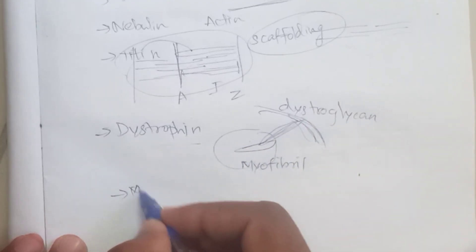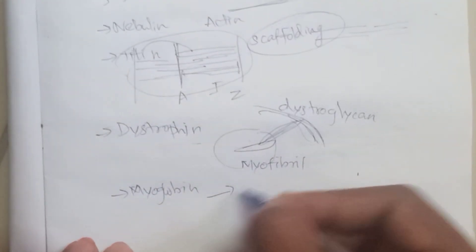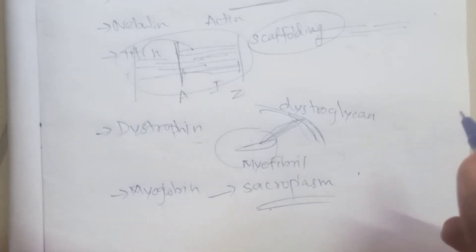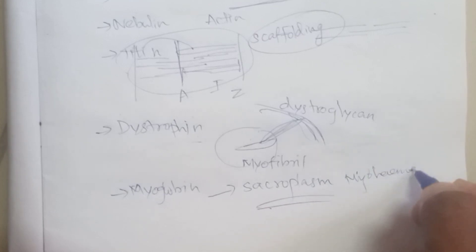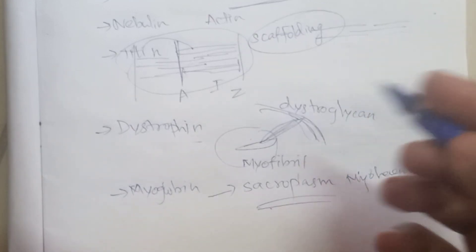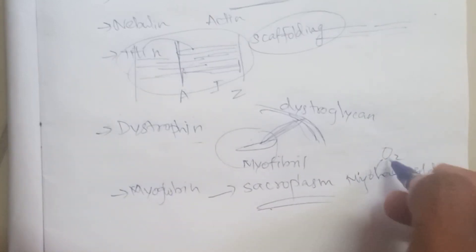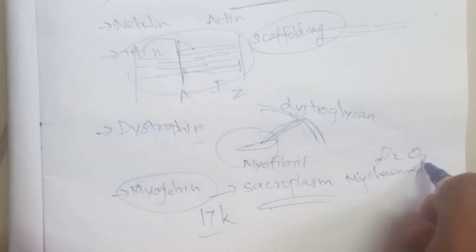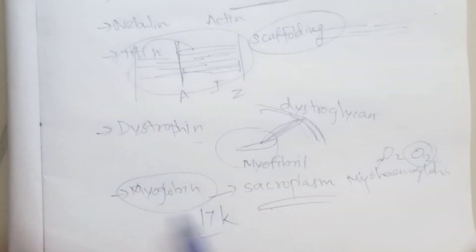Myoglobin is found in the cytoplasm, or sarcoplasm, of the muscle cell. It is similar to myohemoglobin - like hemoglobin, it is an oxygen-binding protein. However, it is monomeric, binding only one oxygen molecule. Its molecular weight is 17,000. So myoglobin stores oxygen in the muscle.